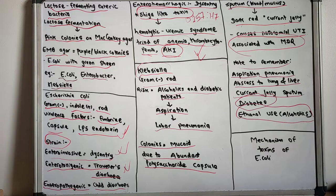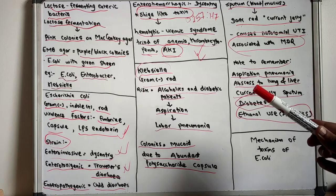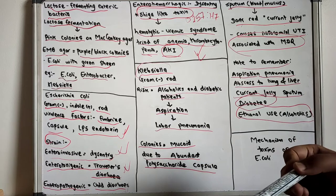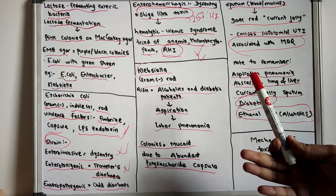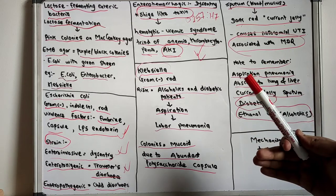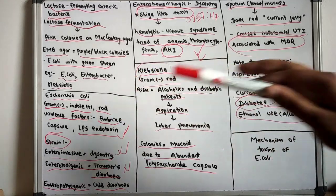So in this video we have talked about the various lactose-fermenting enterics. There are pink colonies on MacConkey agar, purple or black colonies on eosin-methylene blue agar.